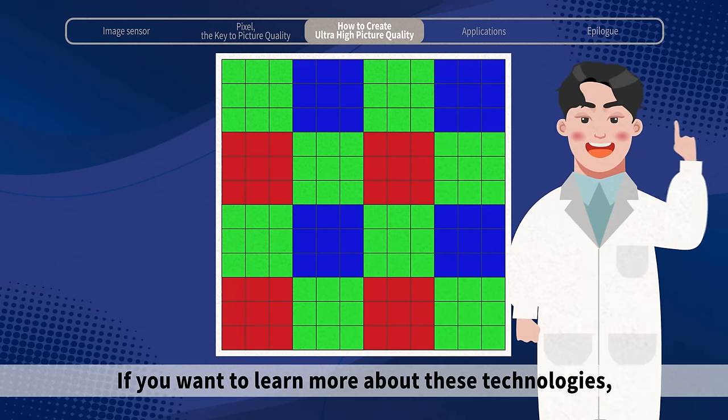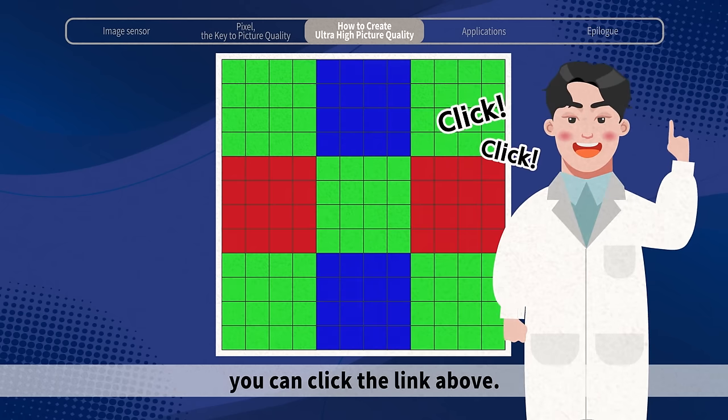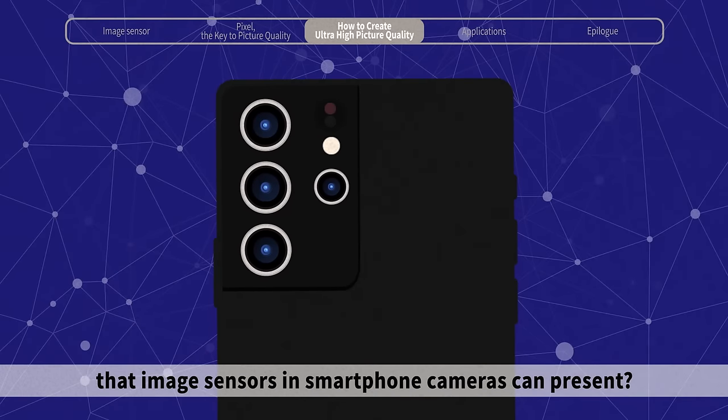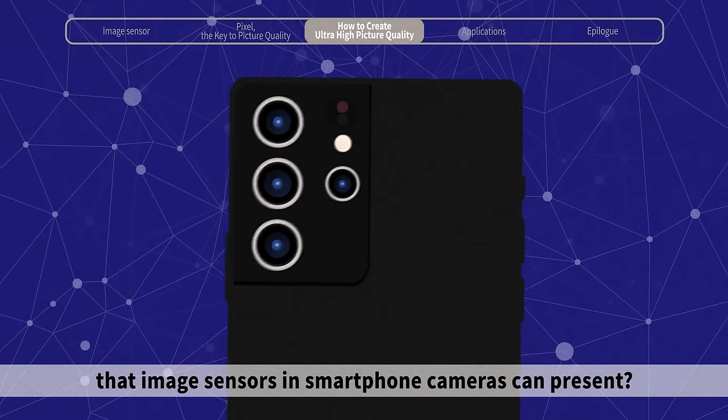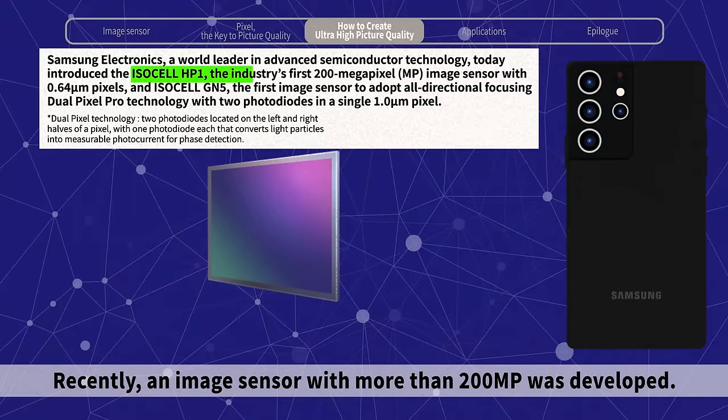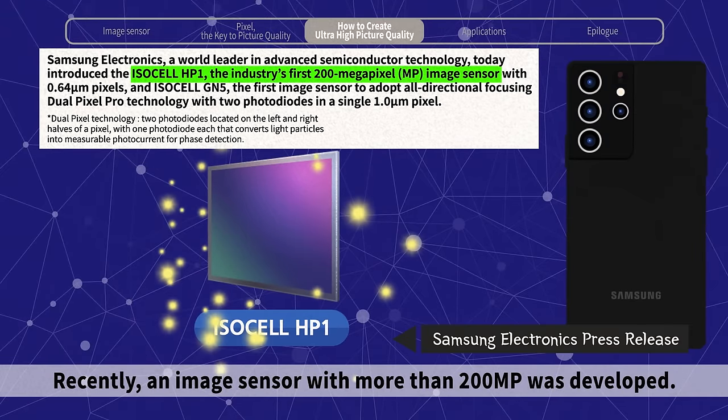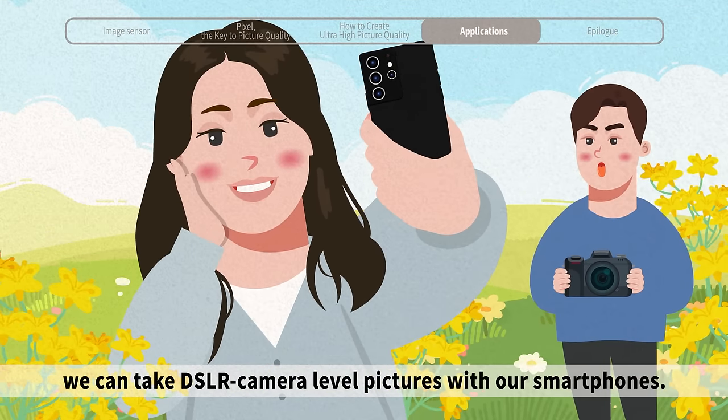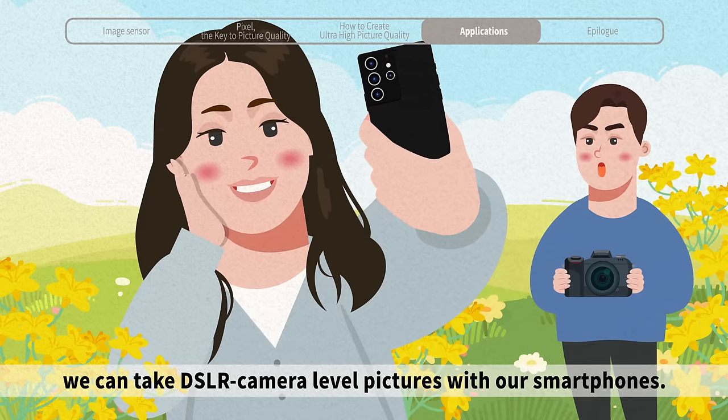If you want to learn more about these technologies, you can click the link above. What is the maximum number of pixels that image sensors in smartphone cameras can present? Recently, an image sensor with more than 200 megapixels was developed. Thanks to constant innovation of the image sensor, we can take DSLR camera-level pictures with our smartphones.